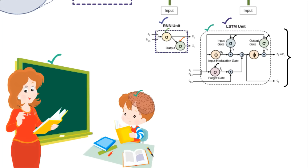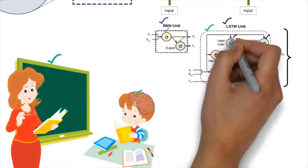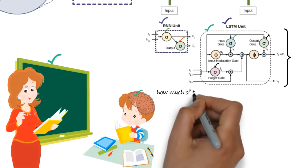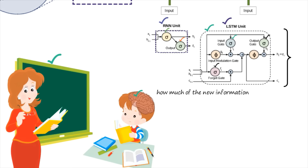If somebody asks what is the importance of the input gate in the LSTM unit: the input gate is useful in order to take the current input data. The input gate in the LSTM network determines how much of the new input data should be added to the memory cell. The main activity is deciding how much of the new information must be added to the memory cell.